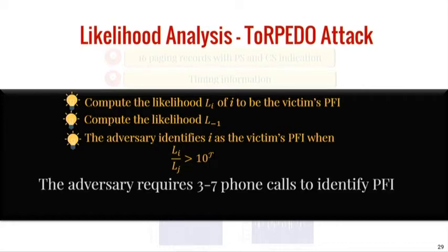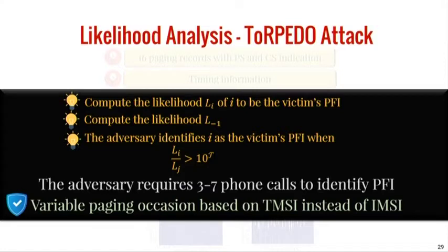When we reported this vulnerability to the cellular standard body in 2018, they tried to fix it quickly by basing the paging occasion on the temporary identifier (TMSI) instead of the permanent IMSI. However, we were skeptical about this fix — it is a classic example of fixing a solution without rigorous security evaluation. With our 5G Reasoner framework published in 2019, we showed that the proposed fix can still be broken, and the adversary can still obtain the TMSI and identify the victim's location.